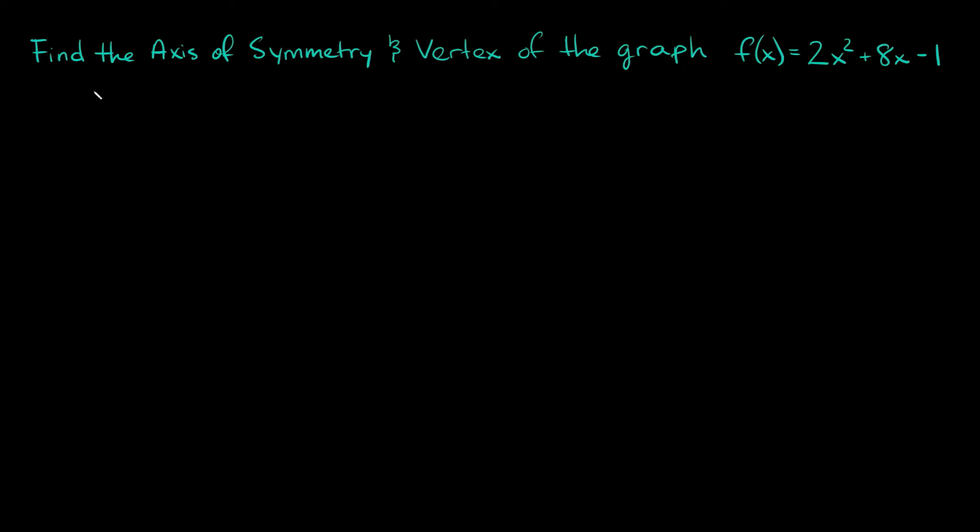What's up you freaking geniuses? In this video I'm going to teach you how to find the axis of symmetry and vertex of a graph in standard form. This problem right here says find the axis of symmetry and vertex of the graph f(x) equals 2x squared plus 8x minus 1.